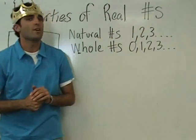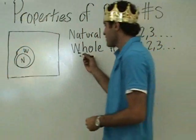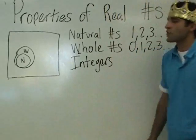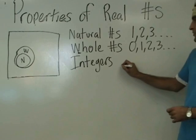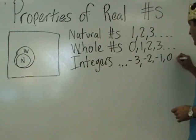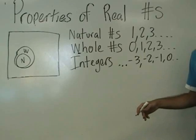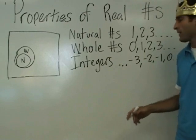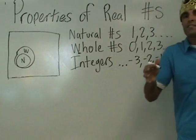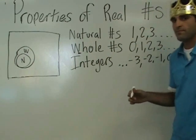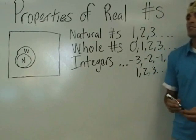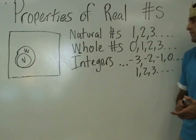Are negative numbers whole numbers? No — good question. The next numbers we're adding are integers. Integers include the negatives as well, but on whole increments — so no 3.5, but negative 3 would be okay. It's all the negatives, through zero, and all the positives — no decimals, no fractions.